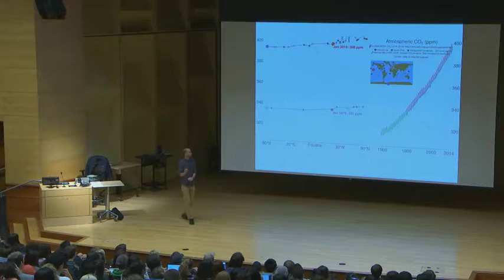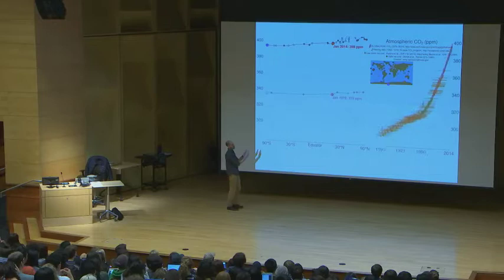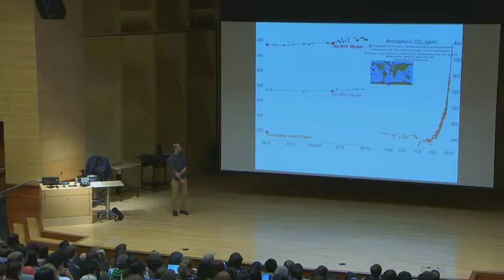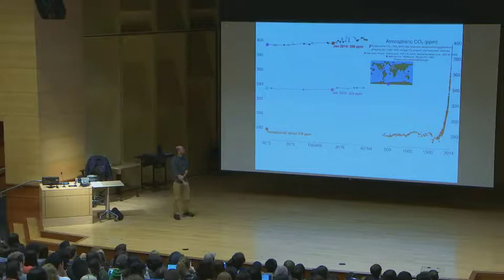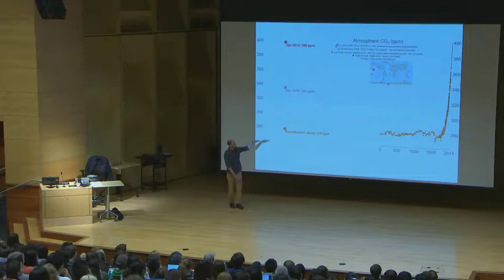If you want to go back before 1958, then you need to start going into ice cores. There's the Law Dome ice core, and that'll go back to something like a few thousand years. Then they drill some different ice cores like the EPICA ice core. The pre-industrial average was around 280 ppm. Now we'll go to some more ice cores.